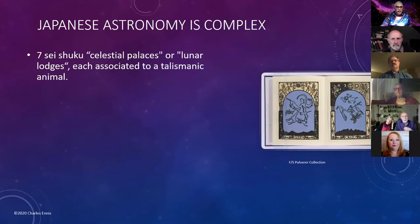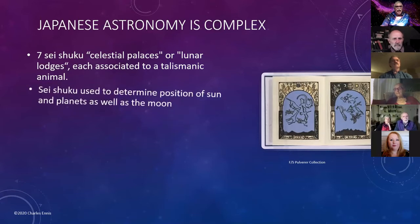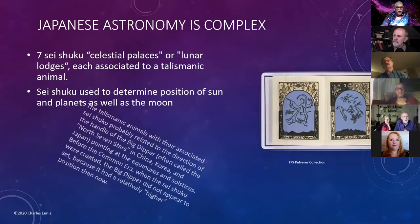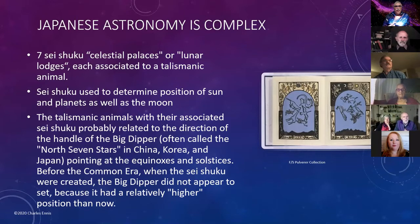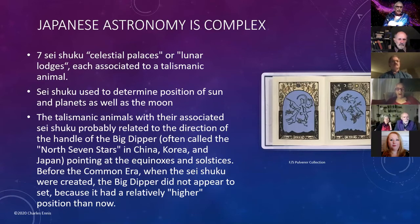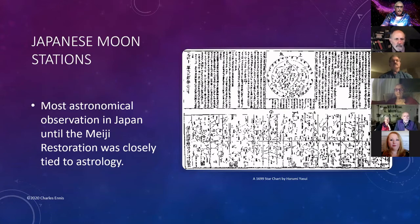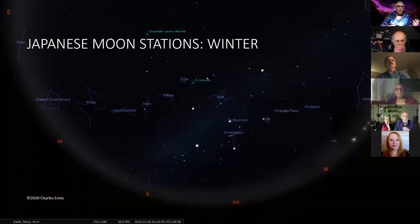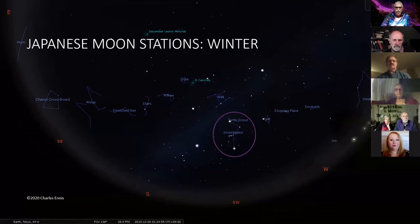Japanese astronomy is complex. They have seishuku — celestial palaces or lunar lodges — each associated with a talismanic animal, used to determine the position of the sun, planets, and moon. The talismanic animals and their associated seishuku probably related to the direction of the handle of the Big Dipper — which they call the north seven stars — pointing at the equinoxes and solstices. Before the Common Era when the seishuku were created, the Big Dipper did not appear to set because it had a relatively higher position. In the Japanese moon stations, Orion is a turtle snout, the Hyades is a net, and the Pleiades is the 'stop in place.' In the summer sky, the teapot is a dipper and a basket.